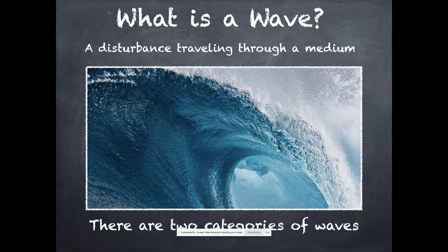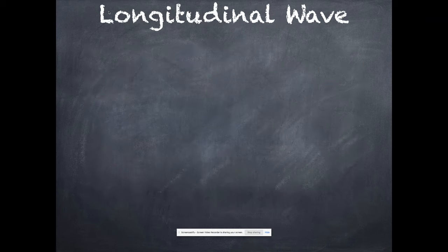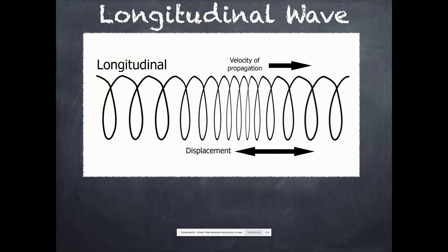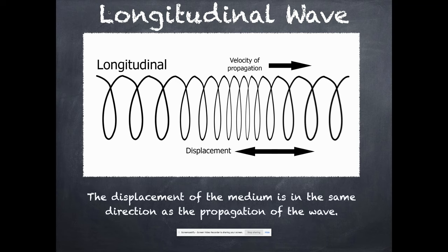Now there are two categories of waves that you'll learn about in your physics book. One is called a longitudinal wave, where the displacement and the velocity of propagation are the same. So it's waving left to right and it's traveling left to right. This would be like a sound wave or certain types of earthquakes or a slinky that's just flat on the tabletop going back and forth.